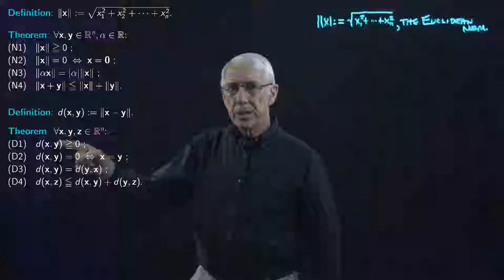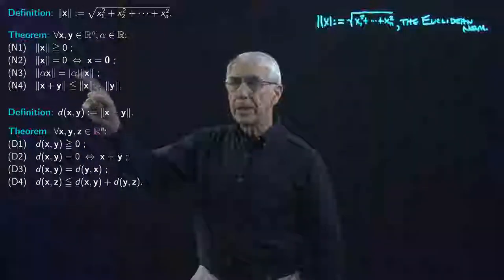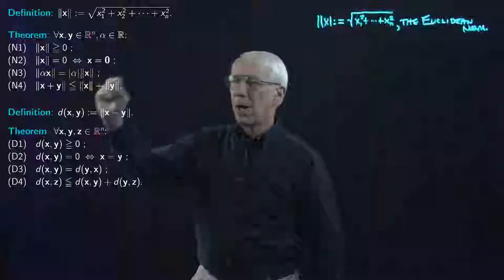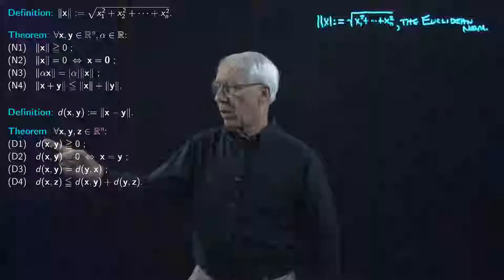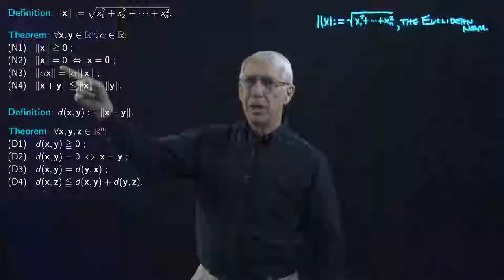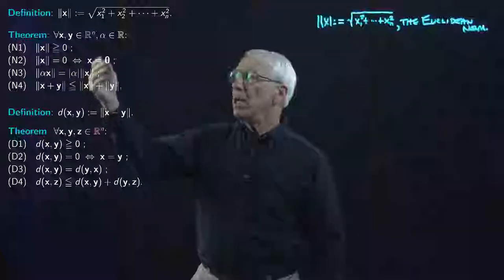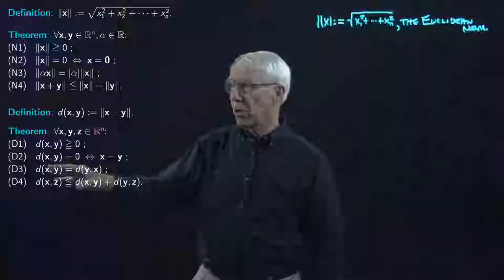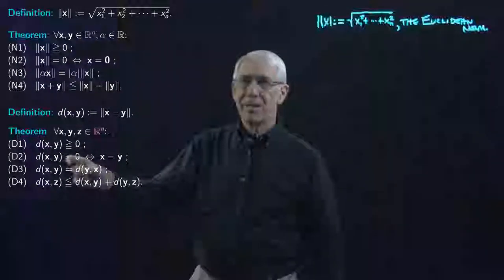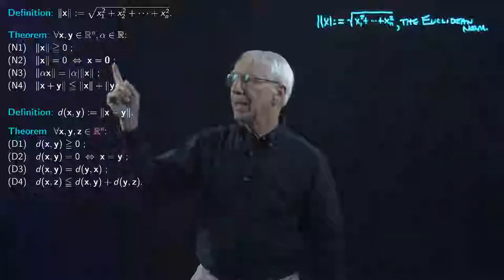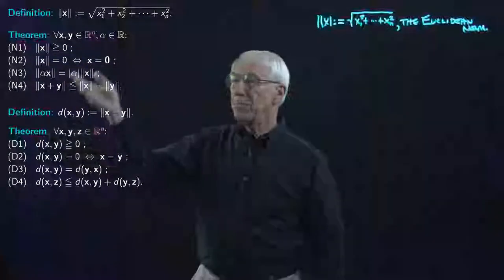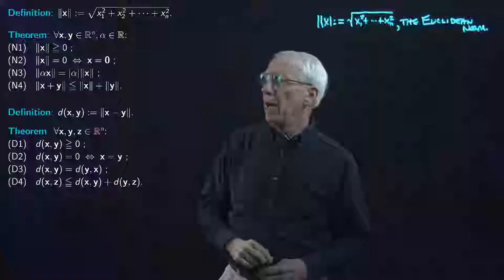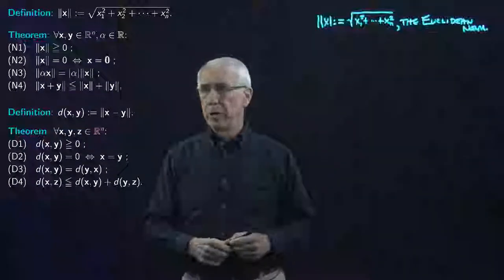We showed that because the norm satisfies N1 to N4, we can use just those conditions to prove four properties D1 to D4 of the distance function. These properties of the distance function came from nothing but N1 to N4. Even the triangle inequality — which took effort to prove using the Cauchy-Schwarz inequality for the norm — became just a two-line proof for the distance. It came from nothing but N1 to N4.